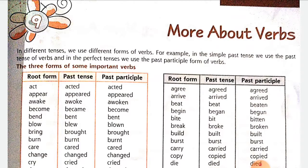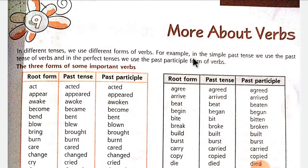I want to give you a small piece of knowledge: the second form of a word is used only in one tense — the simple past tense. In the simple past tense, we use different forms of verbs. In the simple past tense, we use the past tense of verbs.